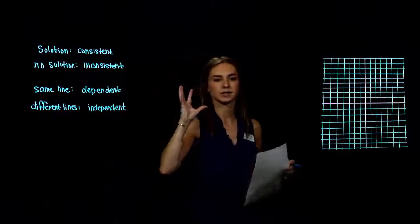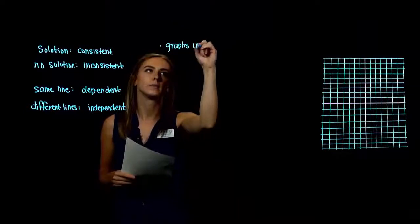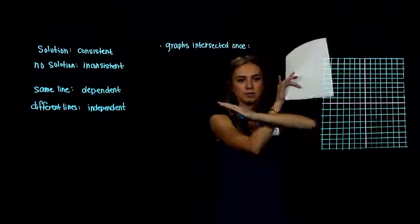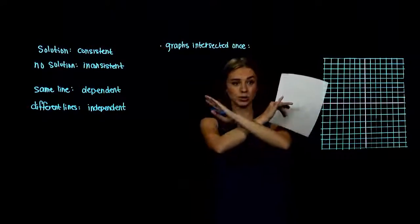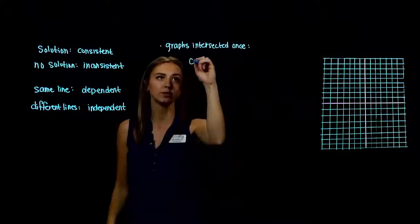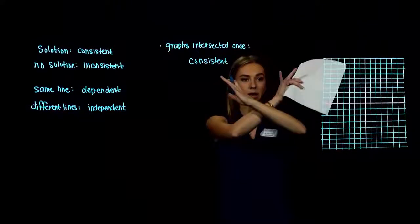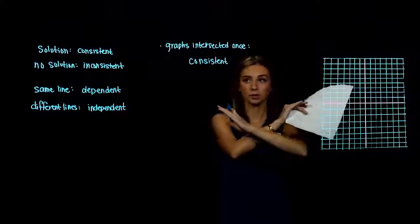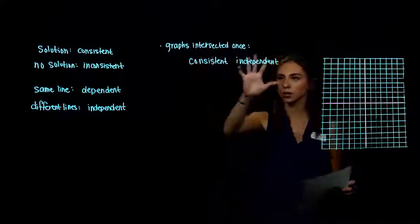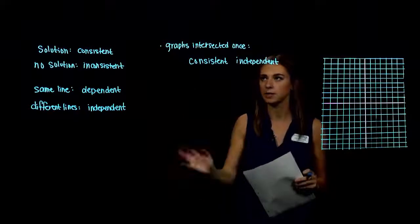Case 1: the graphs intersected once, at one point. We had a solution, so it is a consistent system. The two lines were different, so they are independent. Classification: consistent and independent.